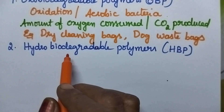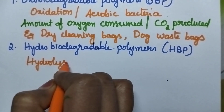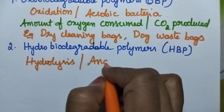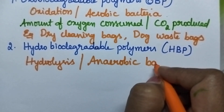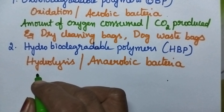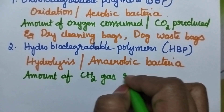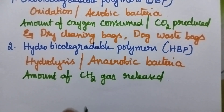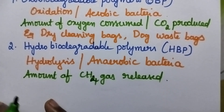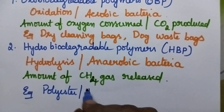Coming to the hydro-biodegradable polymers, here the biodegradation is mainly due to hydrolysis, and it is catalyzed by anaerobic bacteria. The rate of degradation can be estimated by knowing the amount of methane gas released. Good examples of hydro-biodegradable polymers include polyester, also known as Terylene.